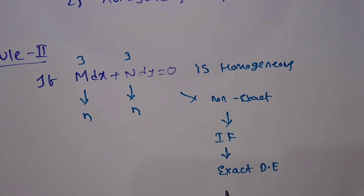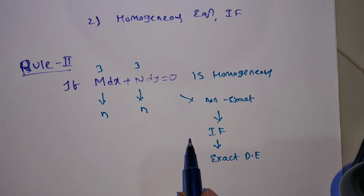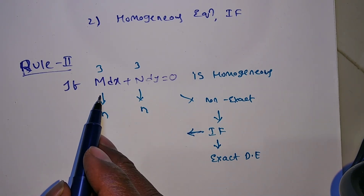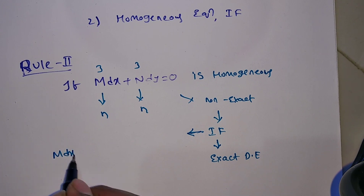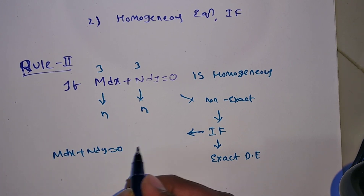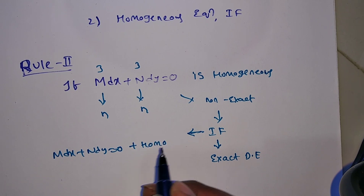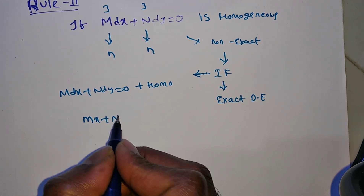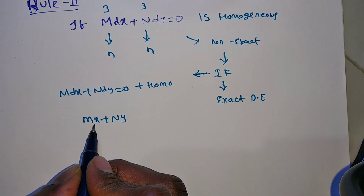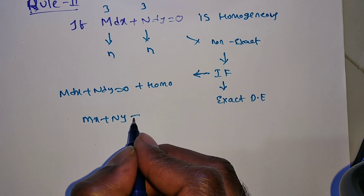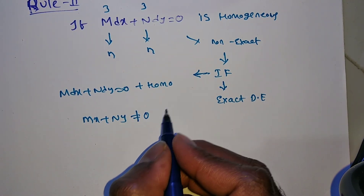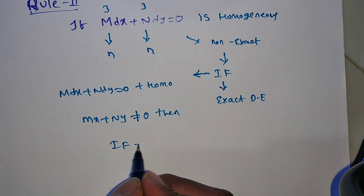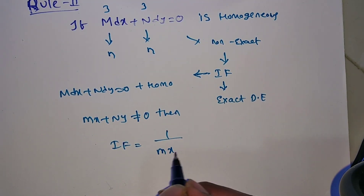Then you know the general solution of an exact differential equation. So, what is the integrating factor? If the given differential equation M dx + N dy = 0 is non-exact and homogeneous, we have to verify the value of Mx + Ny. If Mx + Ny is not equal to 0, then the integrating factor is 1/(Mx + Ny).